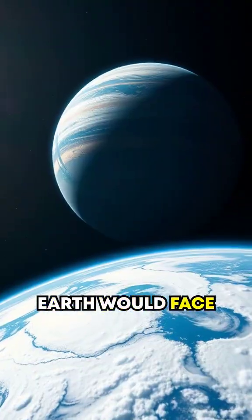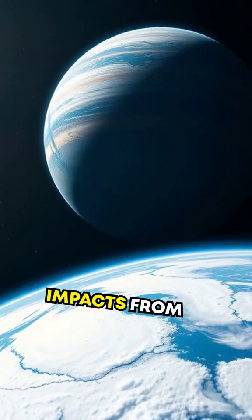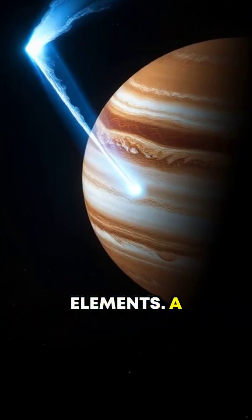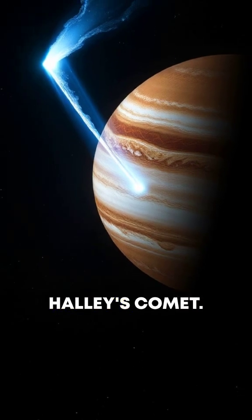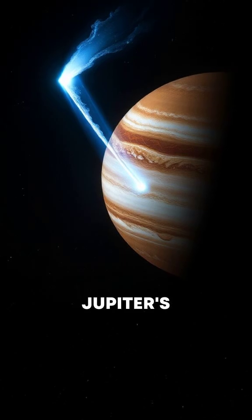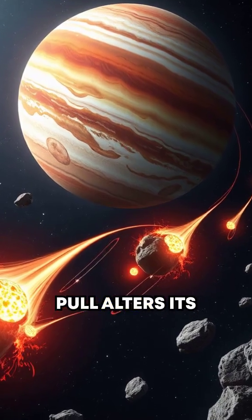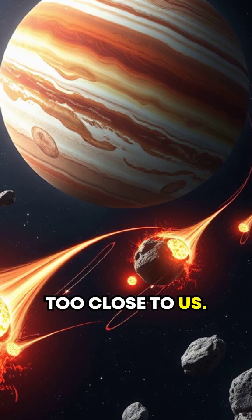Without Jupiter, Earth would face frequent, catastrophic impacts from these rogue elements. A famous example? Halley's Comet. Jupiter's gravitational pull alters its orbit, keeping it from venturing too close to us.